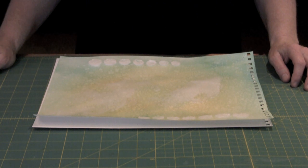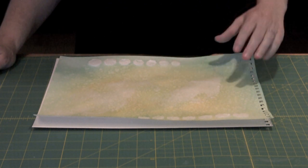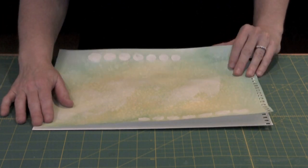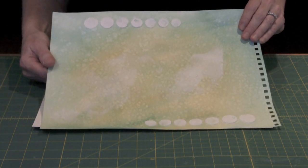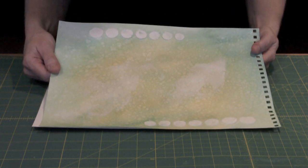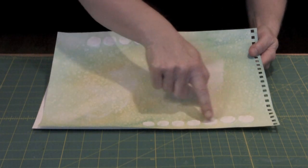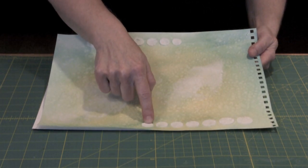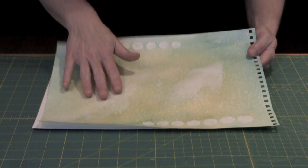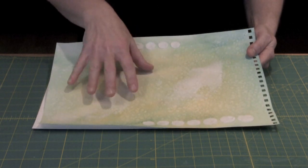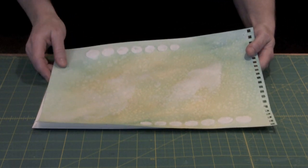The first products we're going to use today are light and coarse molding pastes. I'm using Golden products. You can use whichever brand you prefer. Now this is something that I started yesterday and what I've done is taken some light modeling paste and I've used a circle template and pushed the modeling paste to use the template like a stencil.